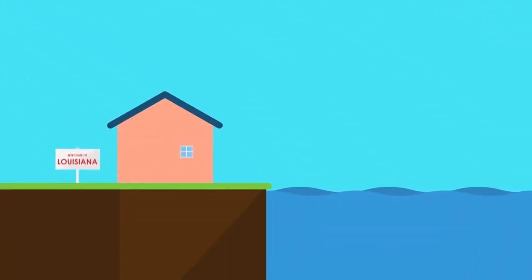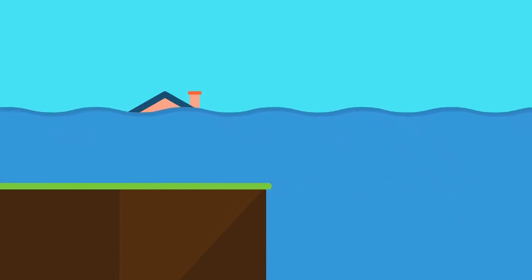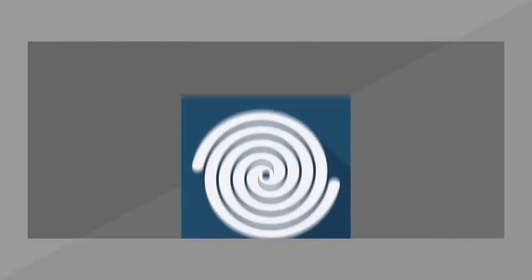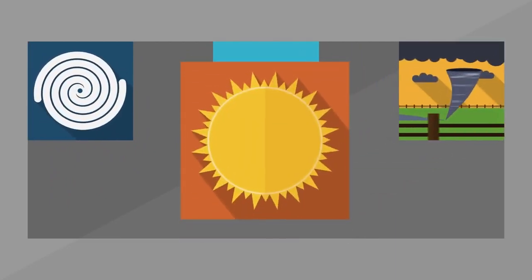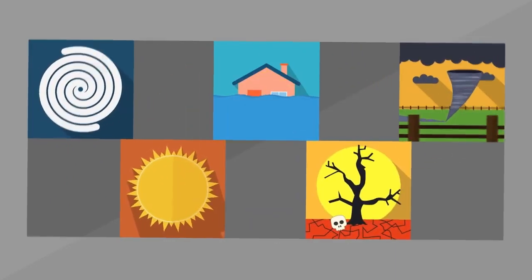The oceans fill with too much water and the shores, like in Louisiana, can't hold all that water and coastal regions get flooded and destroyed. Climate change also causes more frequent and intense natural disasters such as hurricanes, floods, tornadoes, heat waves, and droughts.